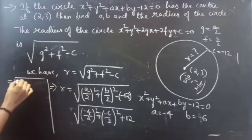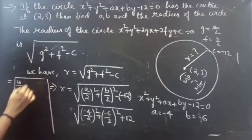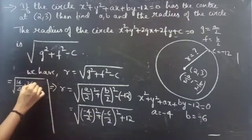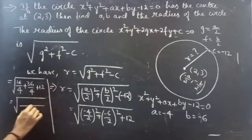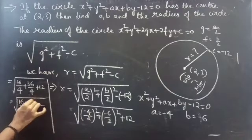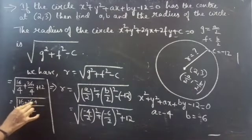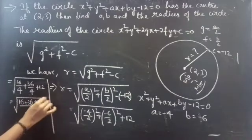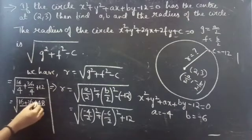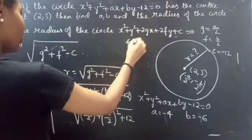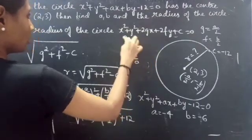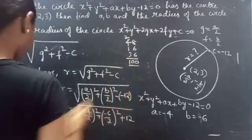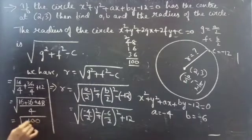Substituting a = -4 and b = -6, and c = -12: r = √((-4/2)² + (-6/2)² - (-12)) = √((-2)² + (-3)² + 12). Taking the common denominator: √((16 + 36 + 48)/4) = √(100/4) = √25 = 5. Therefore r = 5.